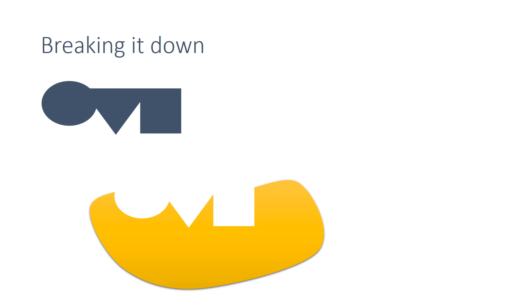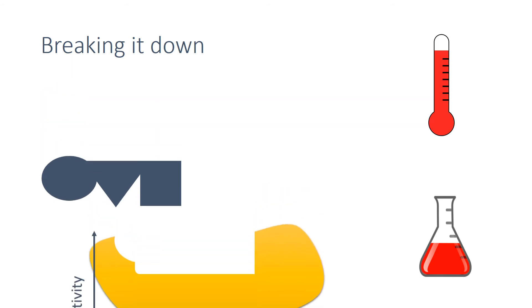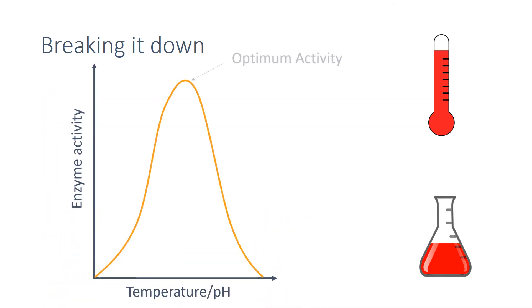An enzyme can be affected by changes in temperature and pH. High temperatures and extreme pHs cause the active site to change. The enzyme can no longer join with the substrate and will no longer work — we call this denaturing. A graph of enzyme activity will therefore look like this.